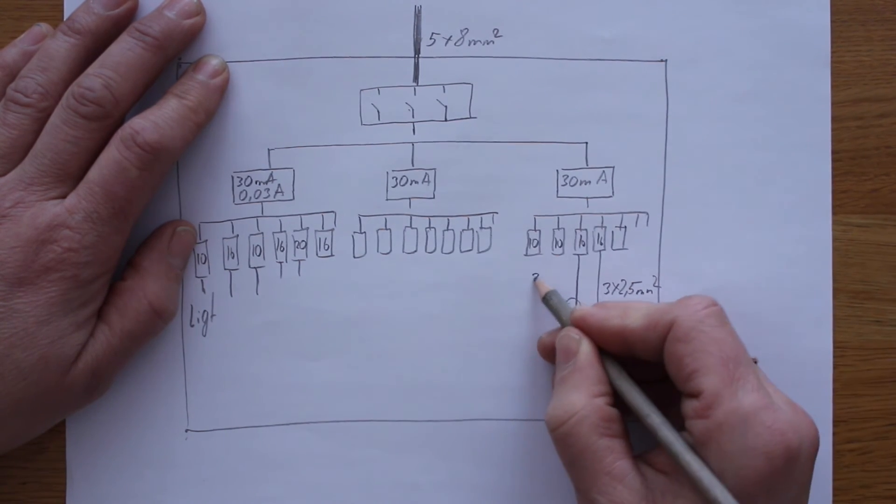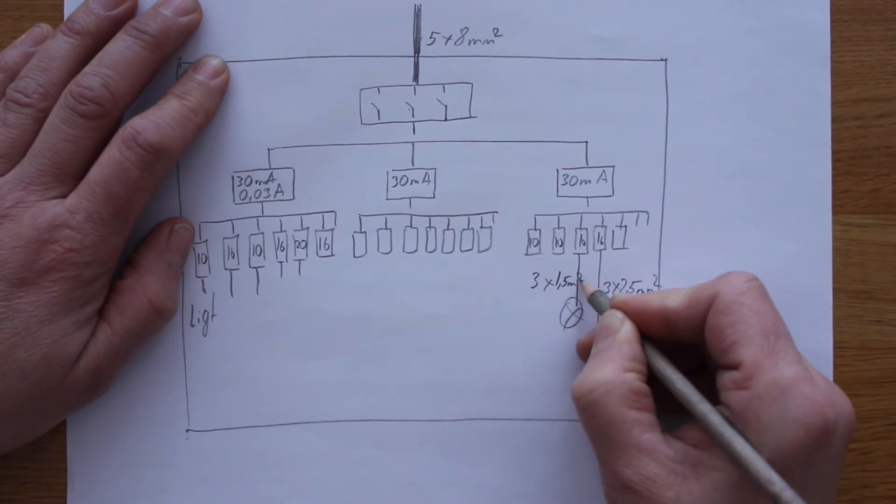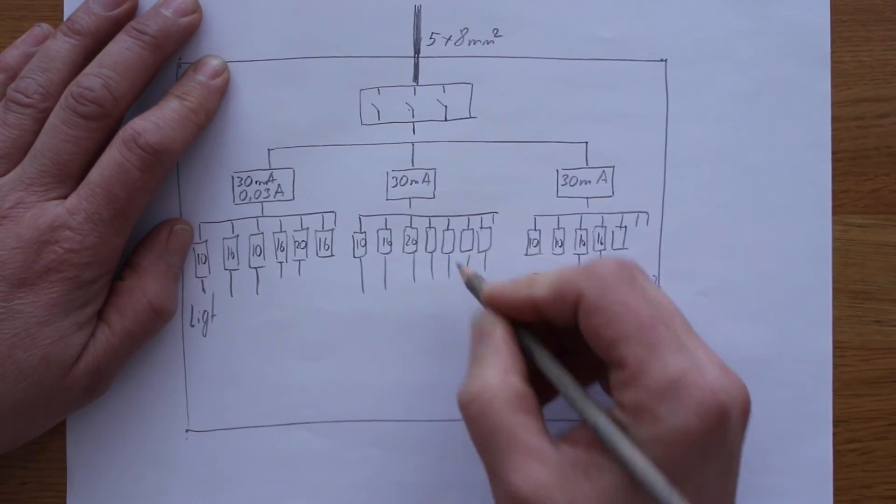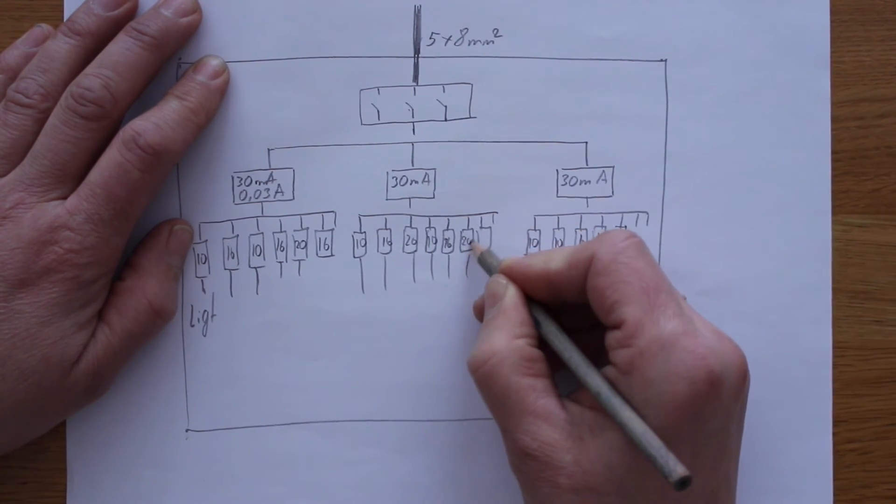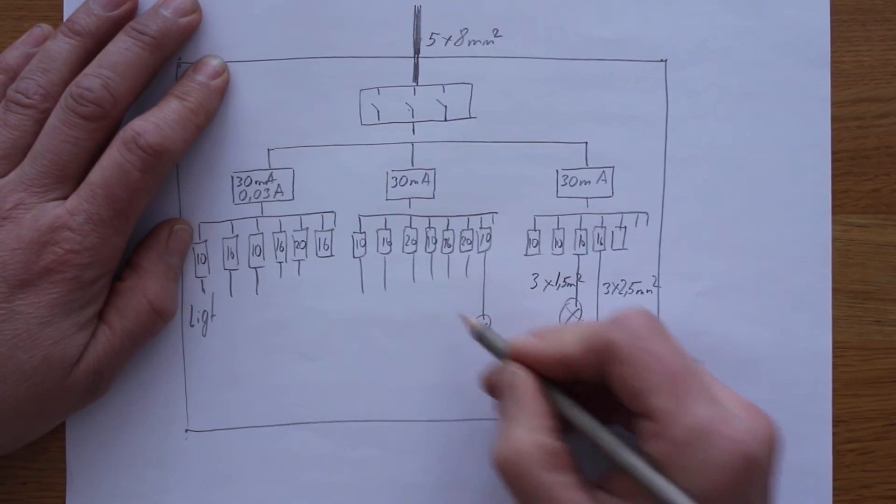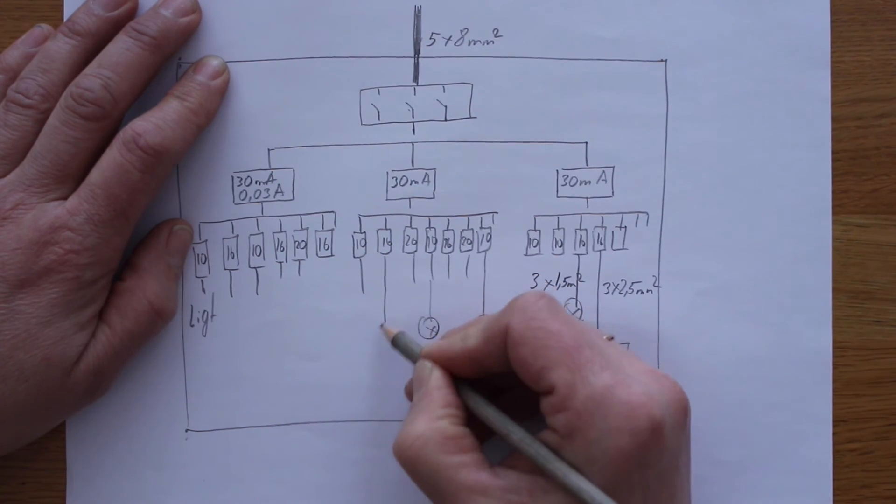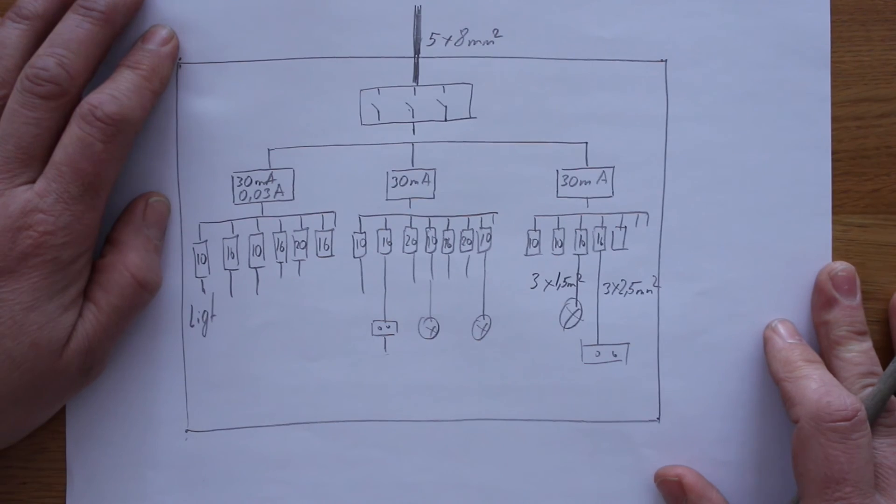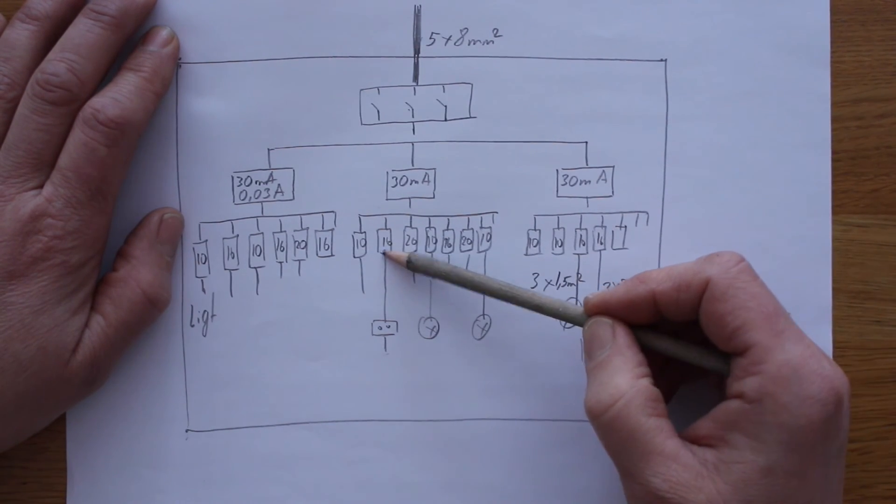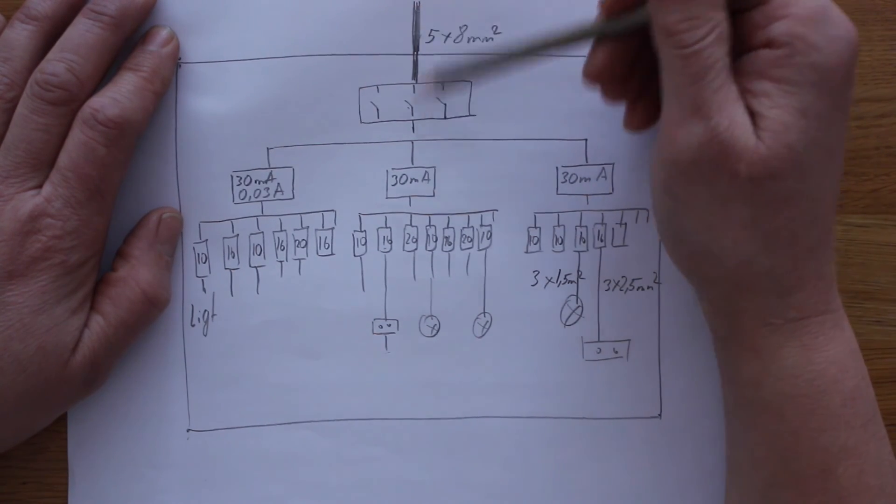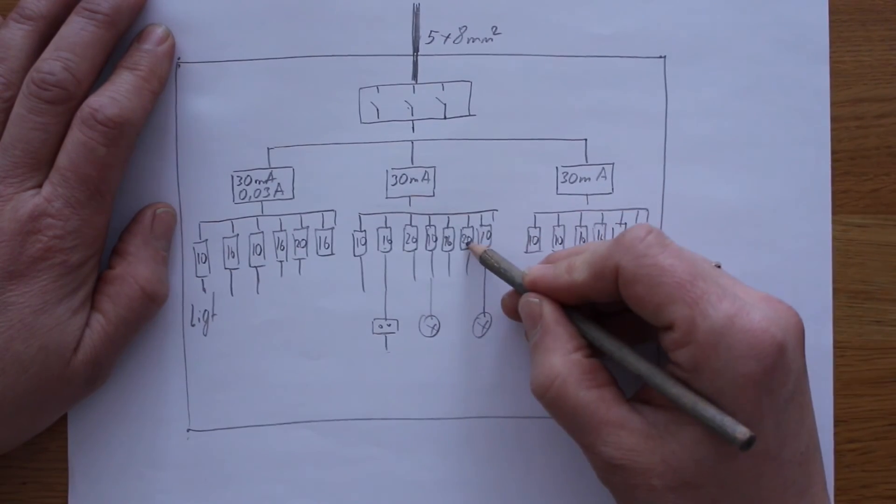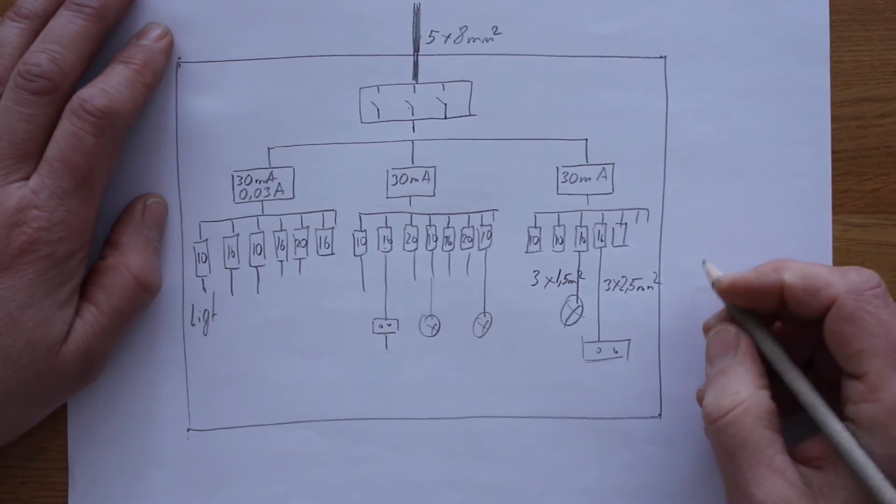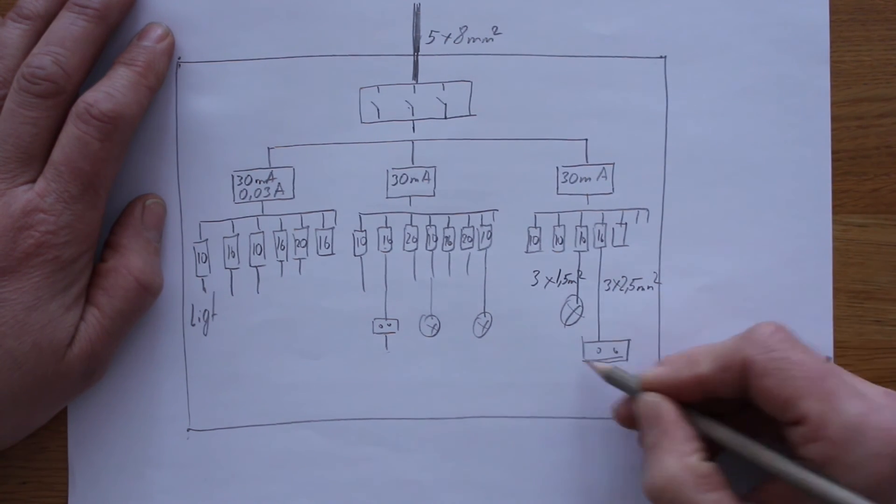By cables, to the socket, 3 by 2.5 millimeters. And to light, cables come 3 by 1.5 millimeters. So about selectivity: if you have here 16, in general distribution you have 20 or 25. If you have here 20, also in general 25. This is selectivity. You need to follow this. Now we look how it looks like in a place.